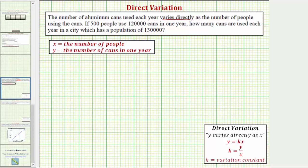The important thing to recognize here is that because this first sentence tells us the number of aluminum cans used each year varies directly as the number of people using the cans, this is an application problem involving direct variation.